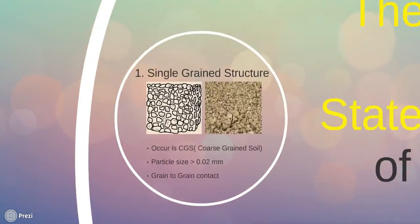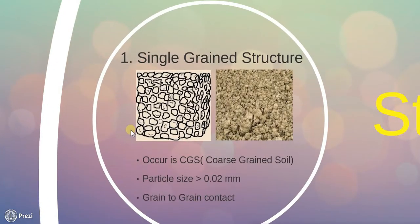Let us start with number one, single grained structure. Single grained structure is characteristic of coarse grained soil with particle size greater than 0.02 mm. Gravitational forces predominate the surface forces and hence grain-to-grain contact results. When deposition of this soil occurs, the particles settle under gravitational forces and take an equilibrium position as shown in diagram. Each particle is in contact with those surrounding it. It is known as single grained structure.